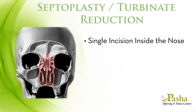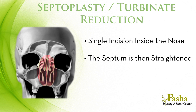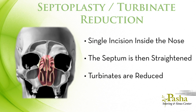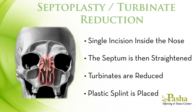This incision is not visible. The septum is then straightened by reshaping the bone and cartilage. The turbinates are reduced by removing a small bone from the inside of the turbinates. This allows the turbinate to collapse without destroying the outer layer or mucosal layer of the turbinate, which participates in keeping the nose moist and directing airflow. Once this is complete, a plastic splint is placed to prevent the septum from moving as well as reducing the risk of scar formation.